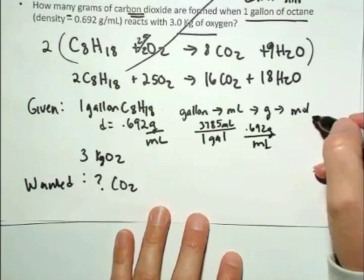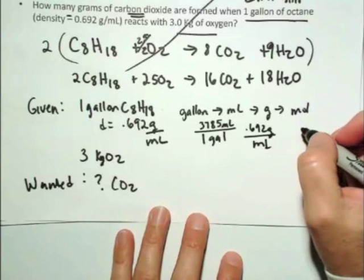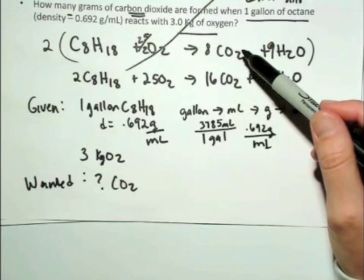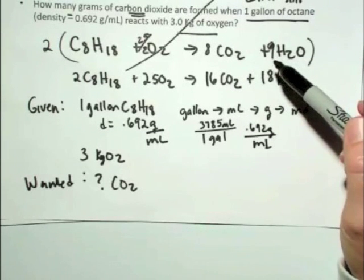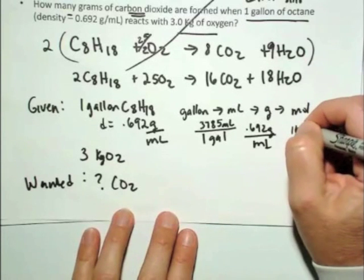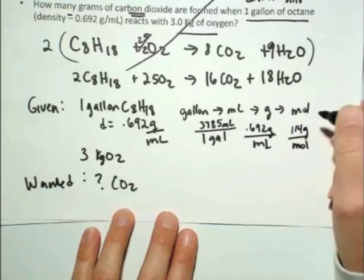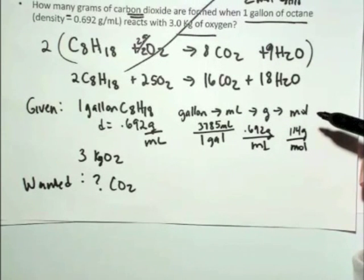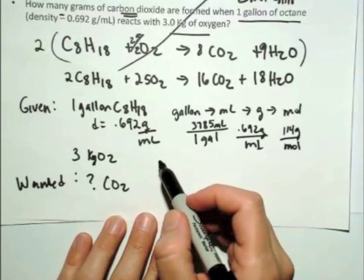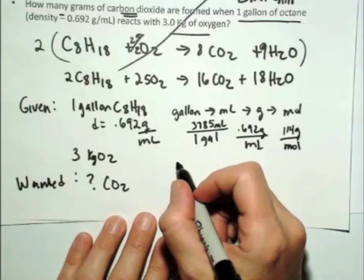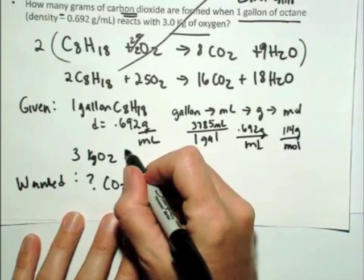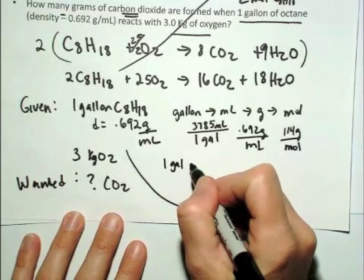And then to get from grams to moles of course you just use the molar mass of octane, which if you look up on the periodic table, carbon is 12, hydrogen is 1, 8 times 12 plus 18 is equal to 114 grams per mole. Okay, maybe given all of that if you get stuck there you ought to be able to stop the tape again and figure out the number of moles here. Okay, but I will work it out for you, it is one gallon, one gallon of octane, C8H18.